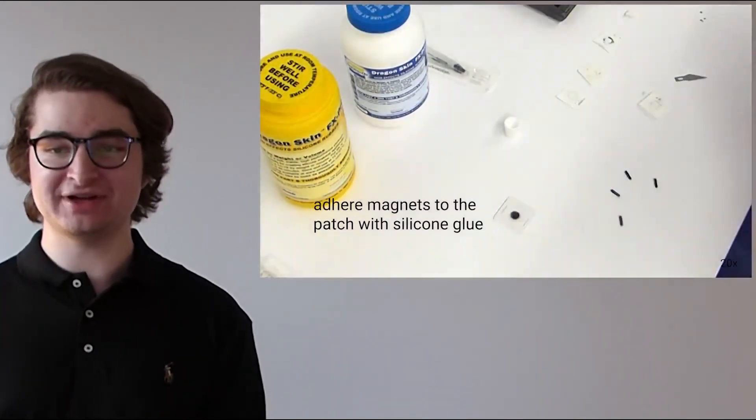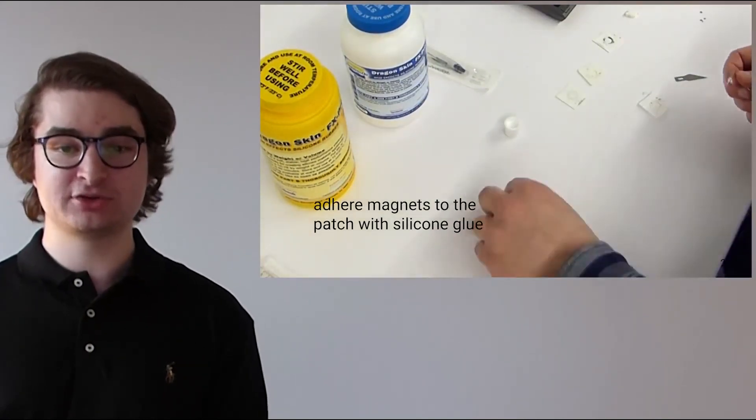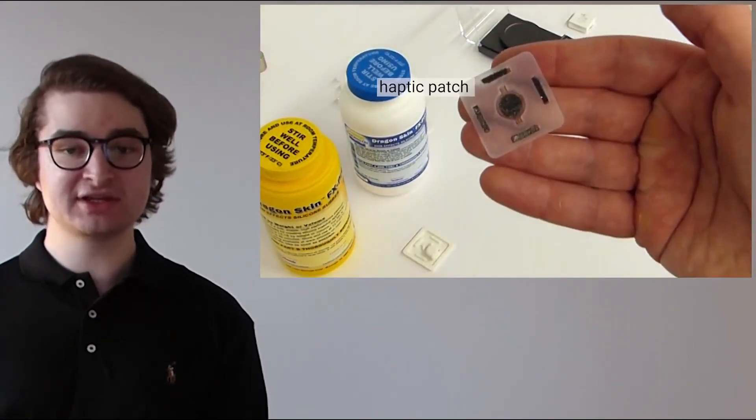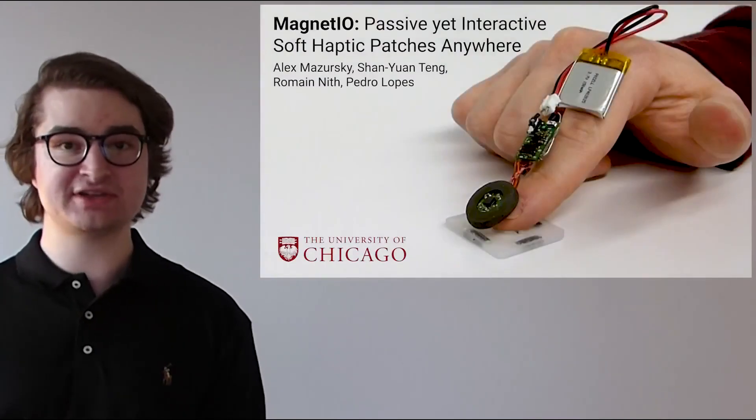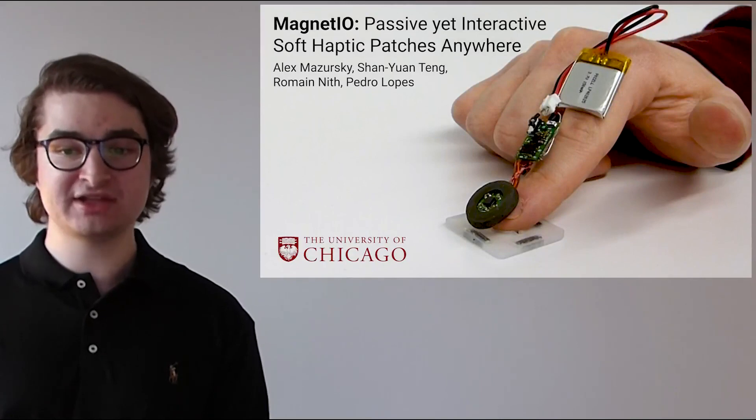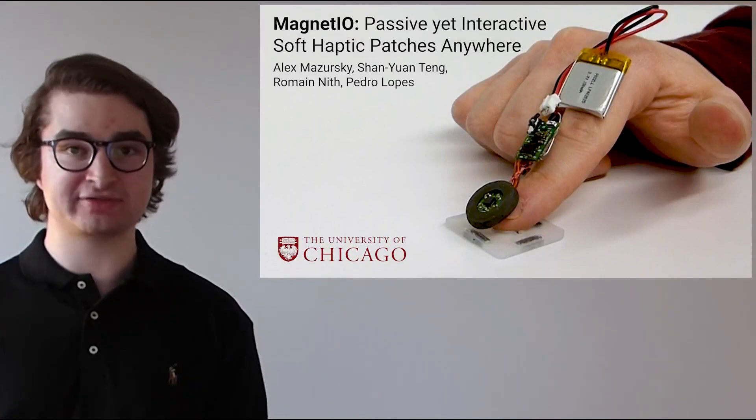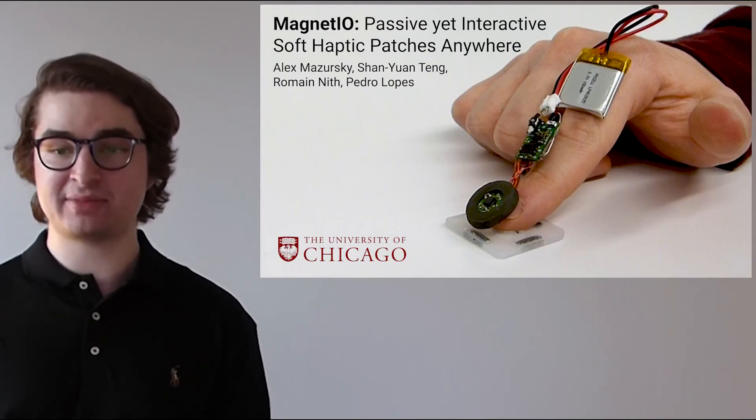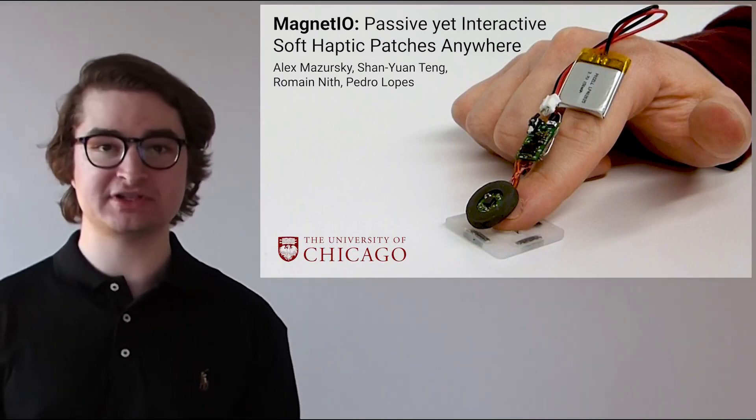To summarize, we designed and evaluated a one-to-many actuator to allow haptic interactions to more easily scale. We tend to think of MagnetIO not necessarily as an end product, but as a hardware and fabrication idea that may inspire more ubiquitous use cases for haptics. Thank you for tuning into our talk, and please come stop by our demo and check out our paper for more details. Thank you.